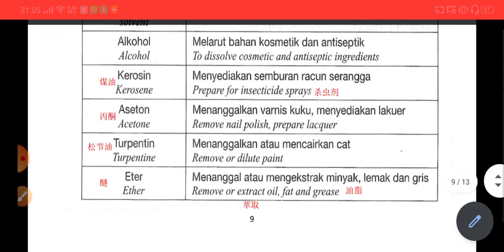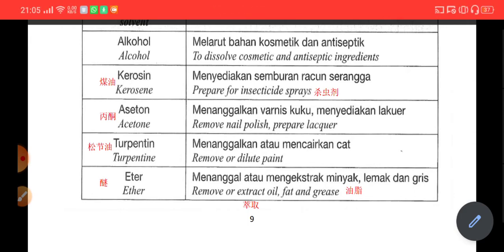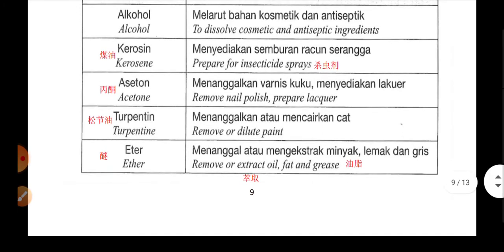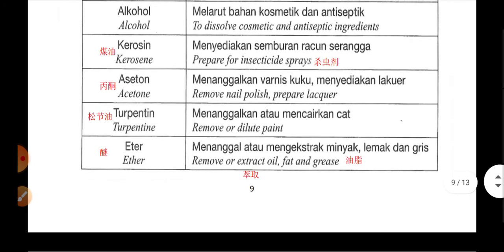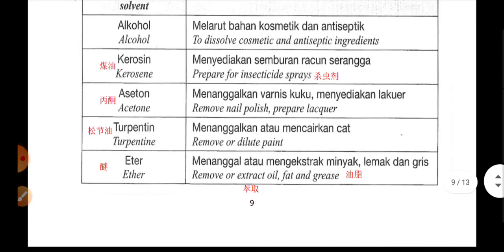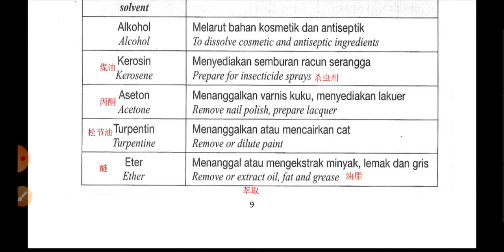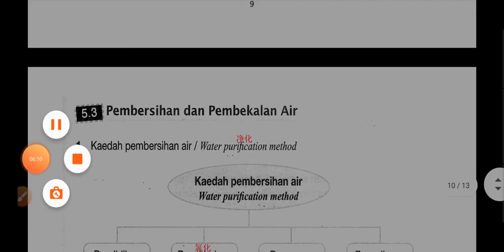然后到 turpentine，turpentine 就是松节油，它是拿来 remove or dilute paint，它拿来移除掉那些漆，或者是去稀释掉那些漆，就是弄到那个漆比较淡的，我们用到 turpentine。然后到 ether，ether 就是一种叫醚的东西，它是拿来 remove or extract oil。Extract 就是萃取的意思，油不是一抽上来就很干净的嘛，你要萃取那个油，它们可能会加这个 ether 进去，用来萃取那个油，或者是萃取 fat and grease。Grease 就是油脂，fat 是脂肪水水的，grease 是那种凝固了的 fat。